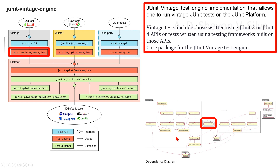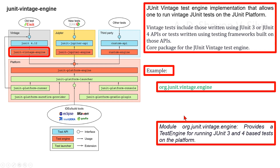Here you can see the dependency diagram. You can see the JUnit Vintage engine in the org.junit.vintage package. As an example, the module org.junit.vintage.engine provides a test engine for running JUnit 3 and JUnit 4 based tests on the platform.